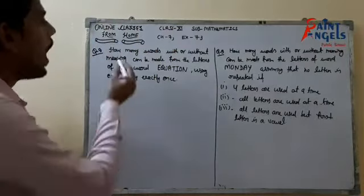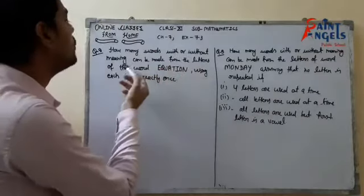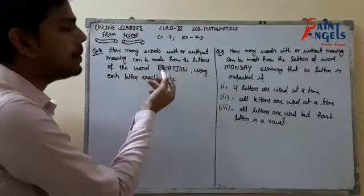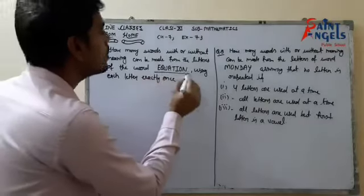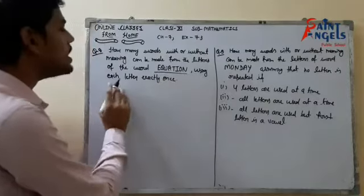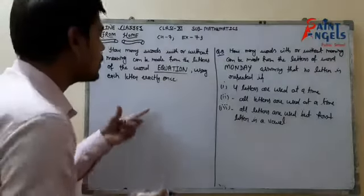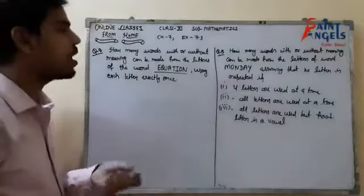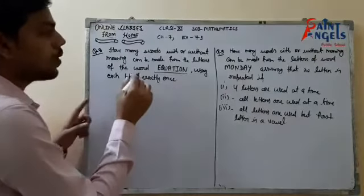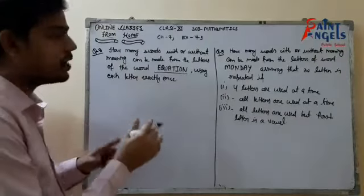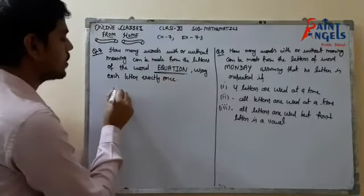The question says: how many words with or without meaning can be made from the letters of the word EQUATION, using each letter exactly once? So repetition is not allowed. We have to make words using the letters of the word EQUATION.